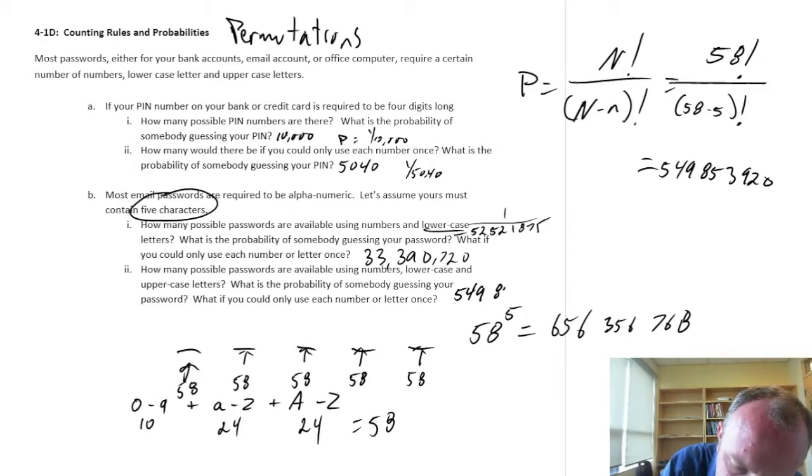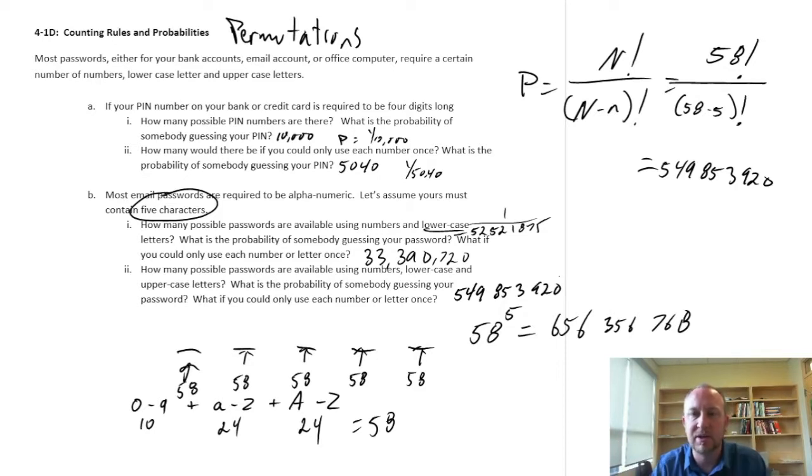Probability of somebody guessing it, still pretty small. But, of course, when we can no longer use any value more than once, then the number of options are reduced.